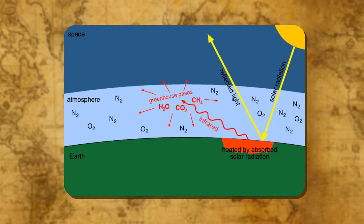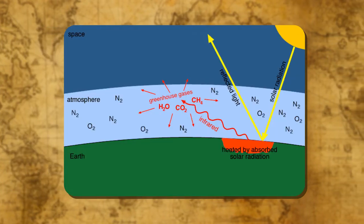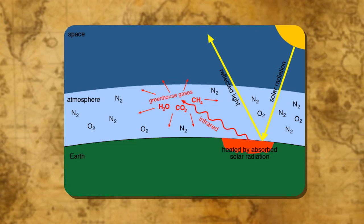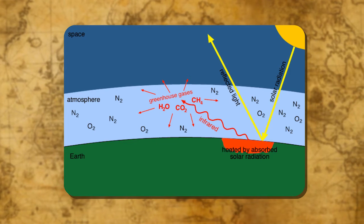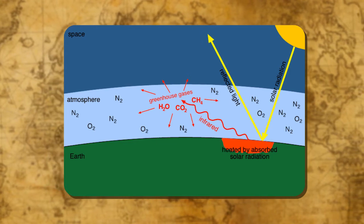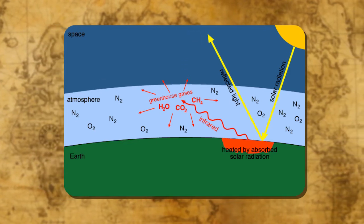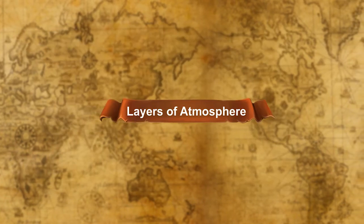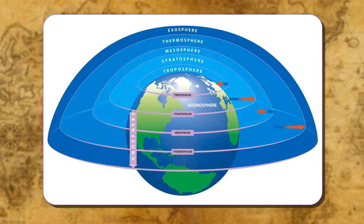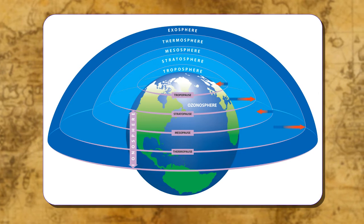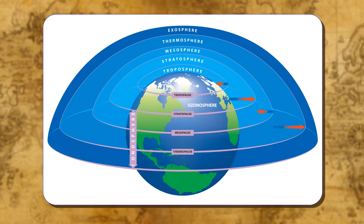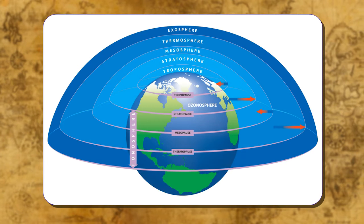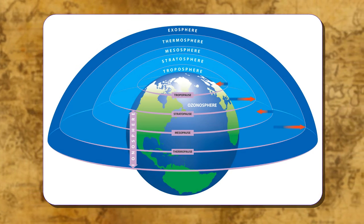CO2 is present in a minute amount, but it is important as it absorbs heat radiated by the earth, thereby keeping the planet warm. It is also essential for the growth of plants. The atmosphere that surrounds the earth is not of the same thickness at all levels. It consists of different layers, each with its own characteristics.